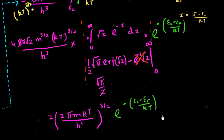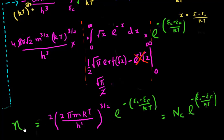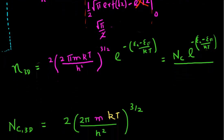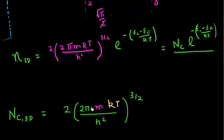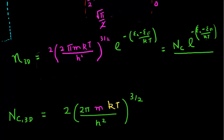So now I can write this as my effective density of states, multiplied by this exponential function. My carrier density in a three-dimensional semiconductor is given by the effective density of states times this exponential, which looks like it comes from Maxwell-Boltzmann statistics. In other words, my effective density of states for a three-dimensional semiconductor is given by this expression, with a dependence on the mass and a temperature dependence.